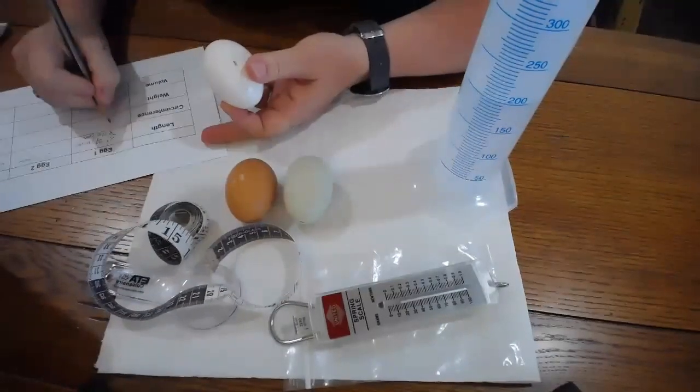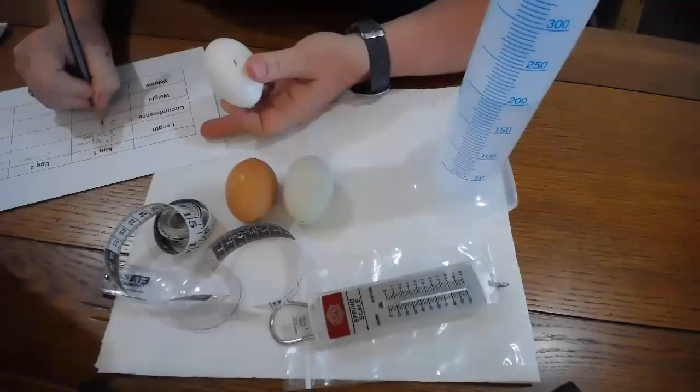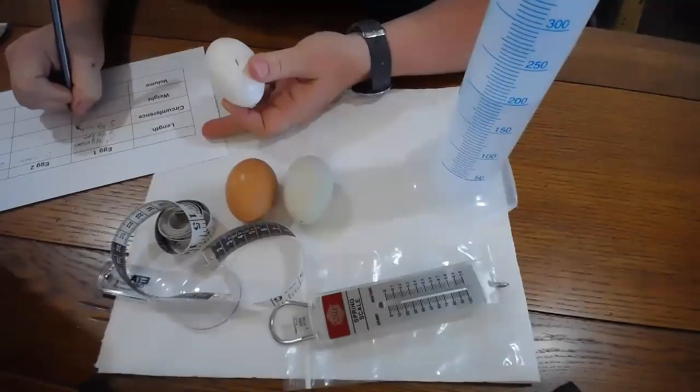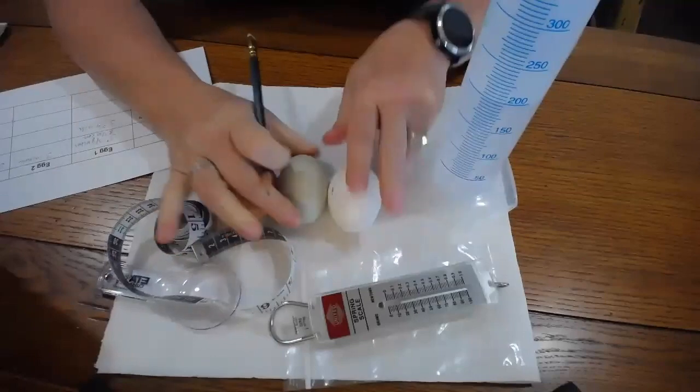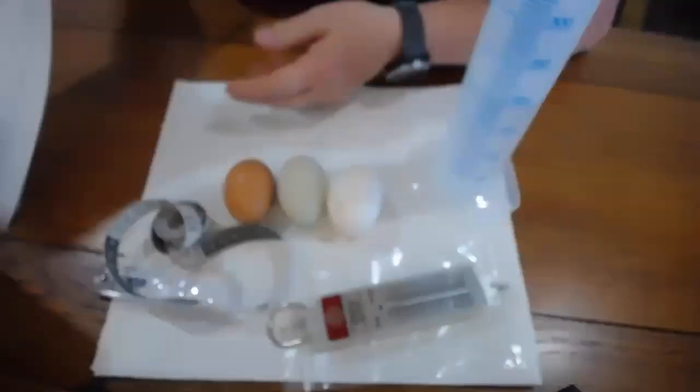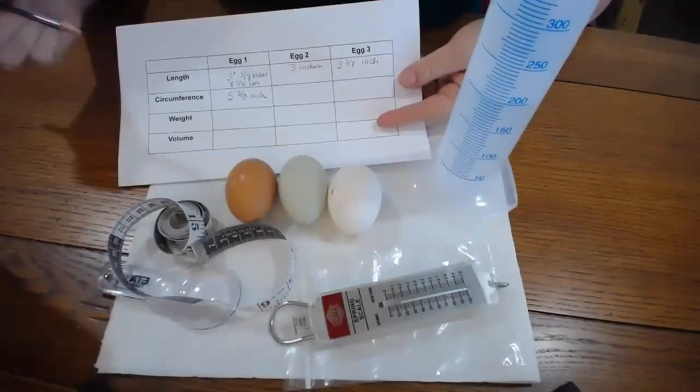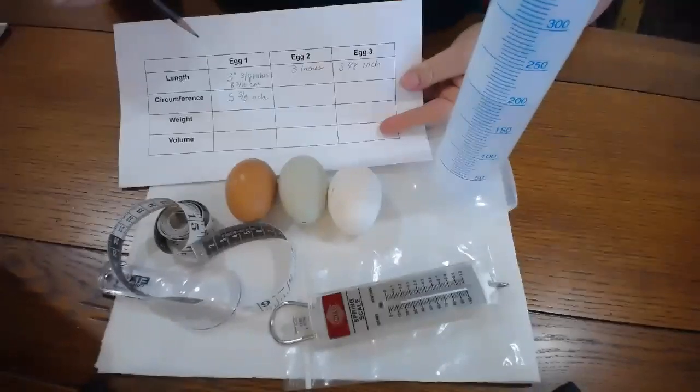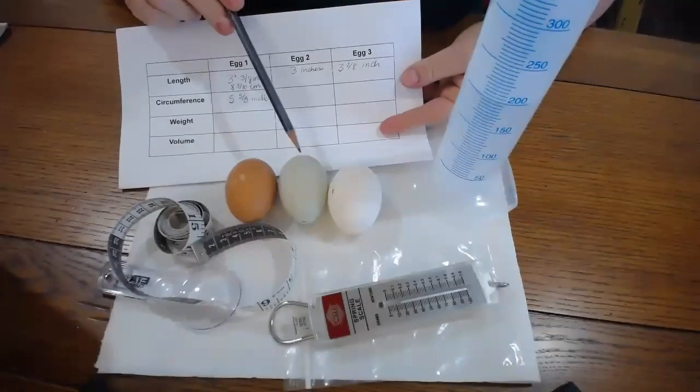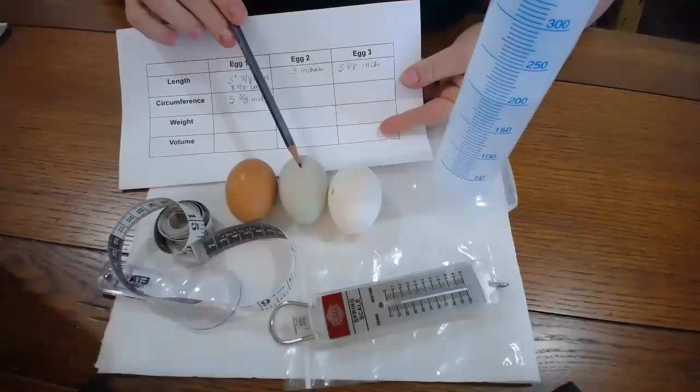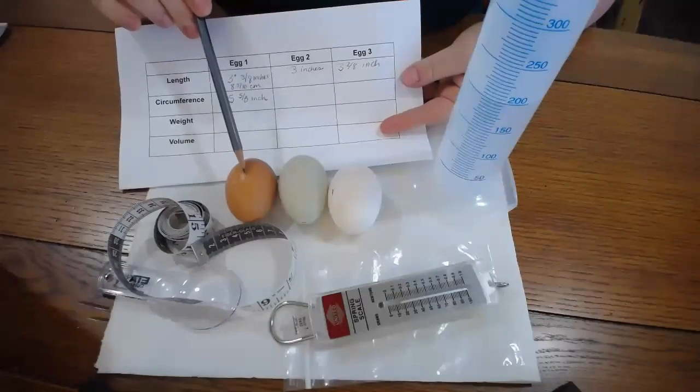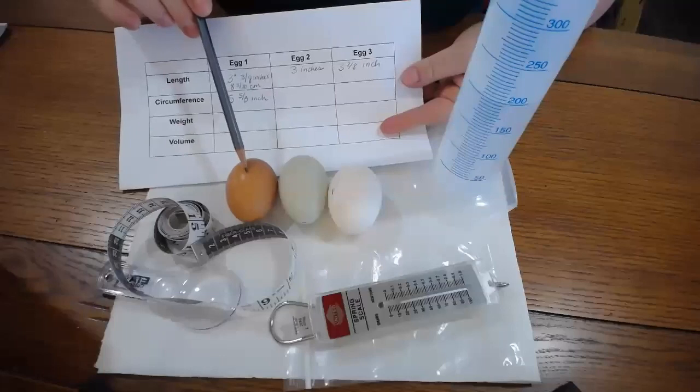Again, I'm going to write that down. And based upon my previous data that I've taken here, my prediction is that the green egg will have the second largest circumference and the brown egg then will be the shortest circumference. And if we have time, we're going to come back and measure that.